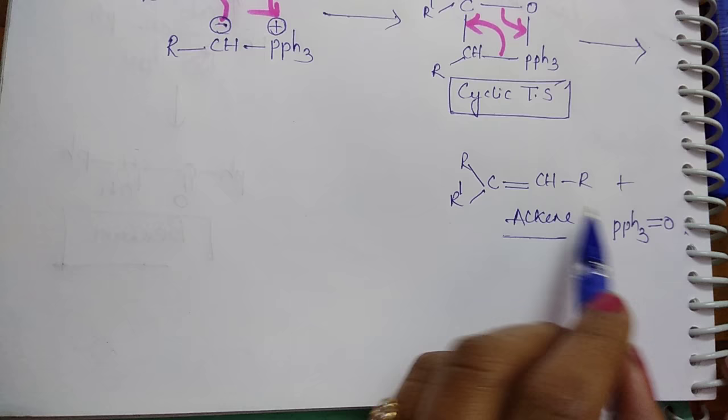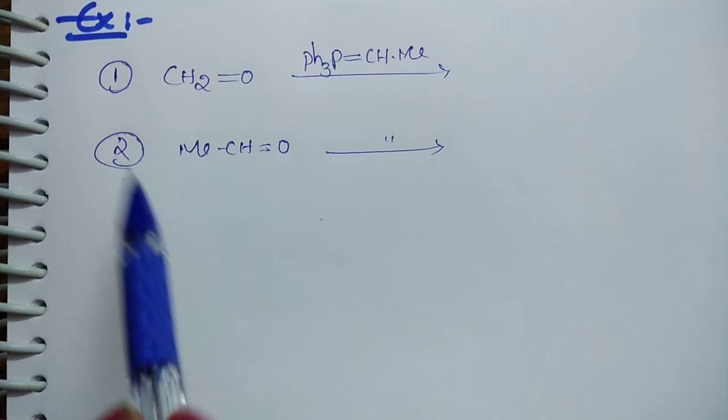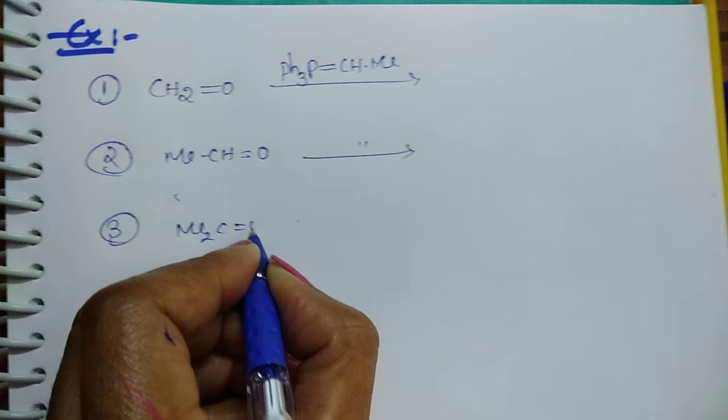...triphenyl phospho oxide. Let us see some examples. When formaldehyde reacts with Wittig reagent, what is the product? If acetone reacts with Wittig reagent, what is the product? Click on pause button and try this.